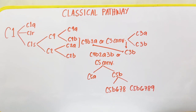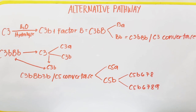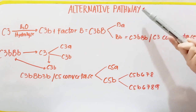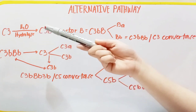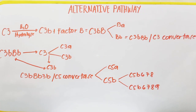Let us now proceed to the Alternative Pathway. In the case of the Alternative Pathway, the requirement for activation is the presence of bacterial polysaccharide or endotoxin. The order of activation starts with C3 — it bypasses C1, C4, and C2.